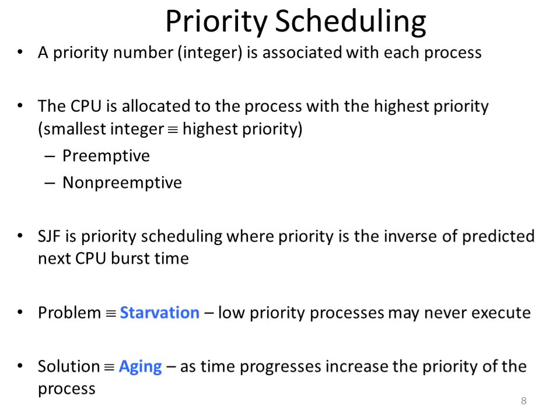One disadvantage of priority scheduling is starvation. A process that is ready to run but waiting for the CPU can be considered blocked — this is called starvation, because lower priority processes never get the CPU for their execution. In heavily loaded computer systems, lower priority processes keep waiting for a very long time. This problem can be solved using a technique called aging, which gradually increases the priority of processes waiting in the queue for a longer period of time, giving them a chance to run.